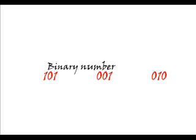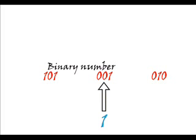As this binary number has total 9 bits, split this number into 3 possible 3-bit groups. From the right, the first group is 0 1 0, whose octal equivalent is 2. The second group is 0 0 1, whose octal equivalent is 1.